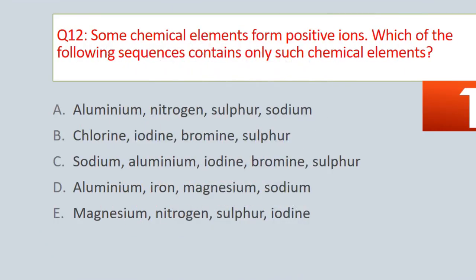Question No. 12. Some chemical elements form positive ions. Which of the following sequences contains only such chemical elements? A. Aluminum, Nitrogen, Sulphur, Sodium. B. Chlorine, Iodine, Bromine, Sulphur. C. Sodium, Aluminum, Iodine, Bromine, Sulphur. D. Aluminum, Iron, Magnesium, Sodium. E. Magnesium, Nitrogen, Sulphur, Iodine.